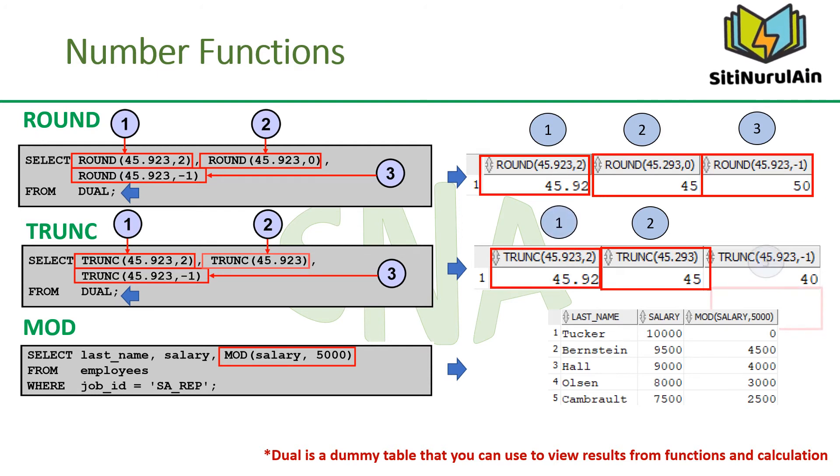The MOD function finds the remainder of the first argument divided by the second argument. The slide example calculates the remainder of the salary after dividing it by 5000 for all employees whose job ID is SA_REP.